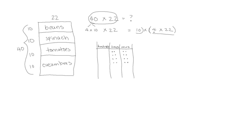Now we also know that when we multiply by 10, the units in our chart simply go up to the next higher unit. So 8 tens, if we multiply by 10, would become 8 hundreds. Similarly, 8 ones, if we multiply by 10, would become 8 tens. So we have 800 plus 8 tens, which is 80. We don't have any ones, so if we add those together we get 880. So our original problem of 40 times 22 is 880.